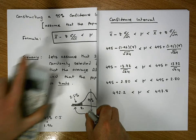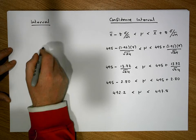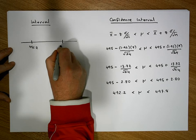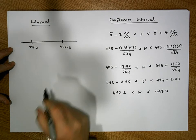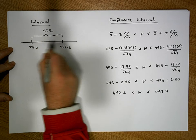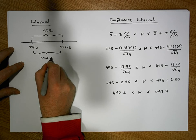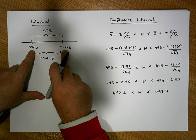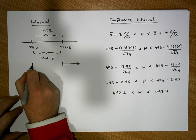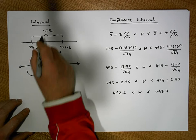Let's draw this on an interval. We have our lower bound of 492.2 and our upper bound of 497.8. We are 95% confident that the true population mean mu is between 492.2 mils and 497.8 mils. But it is still possible that the true population mean is outside those particular bounds — this should only happen approximately 5% of the time.